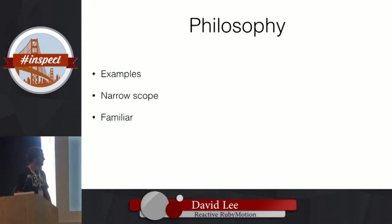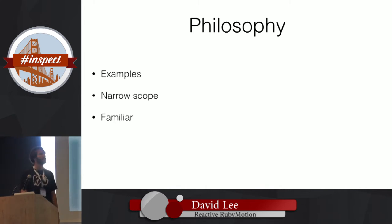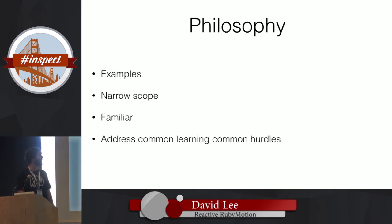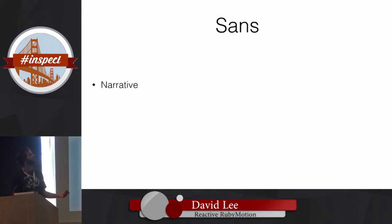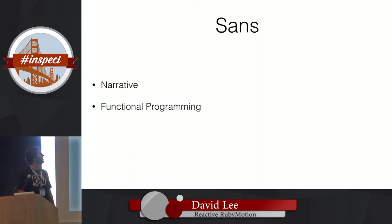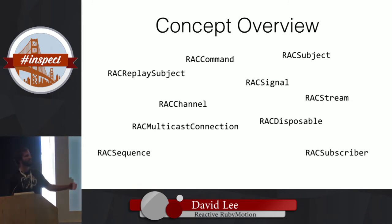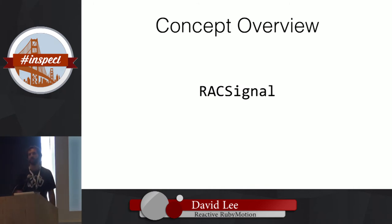The philosophy of this talk: I gave some examples. ReactiveCocoa is pretty big so I'm keeping the scope narrow. I want to keep it familiar so everyone understands, because there's a lot of terminology that can be a stumbling block. I know from experience — you go to the GitHub repo, read the readme and documentation, and there's a laundry list of things you need to know. It's not easy. I want to address the common hurdles people face when learning ReactiveCocoa. I'm not going to do narratives about mutable state or functional programming — I'm just going to show you and hope it catches some people's interest. We're going to focus on just one thing: RACSignal.